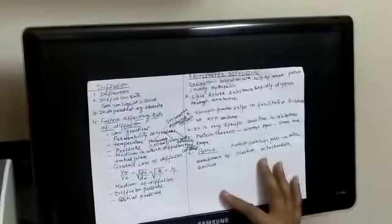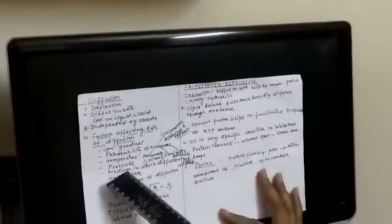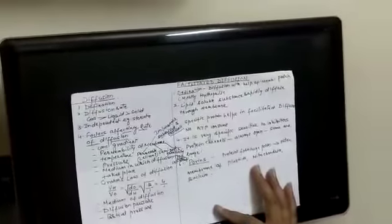Next is pressure. As we increase the pressure, rate of diffusion also increases. And next is the medium in which diffusion takes place. If the density of the medium is high, then the rate of diffusion decreases. And if it is low, then the rate of diffusion increases.